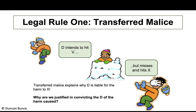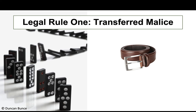A common student mistake is saying it is the actus reus that transfers to another victim — that is not true. The key word is 'malice': this is a topic about mens rea, so it is the mens rea the defendant had towards the intended victim that is transferred to the other victim. The law is saying: just because through quirk of fate you didn't injure or kill the intended victim, you still have the mens rea, so you should still be at fault.